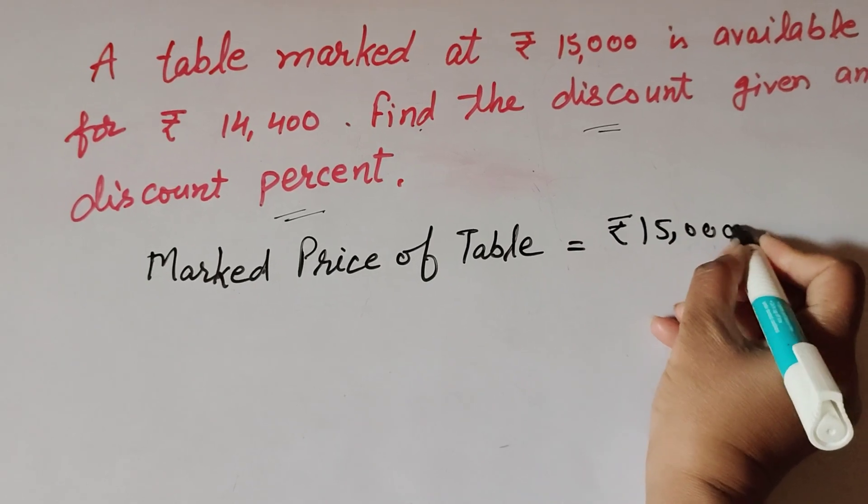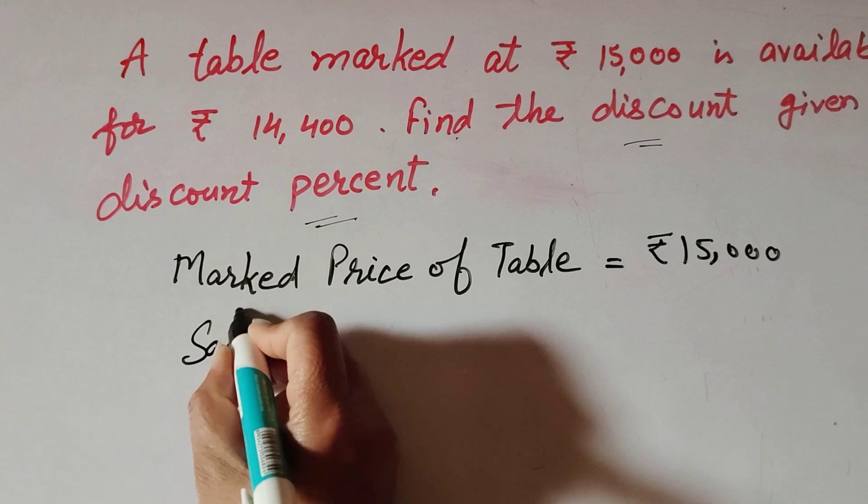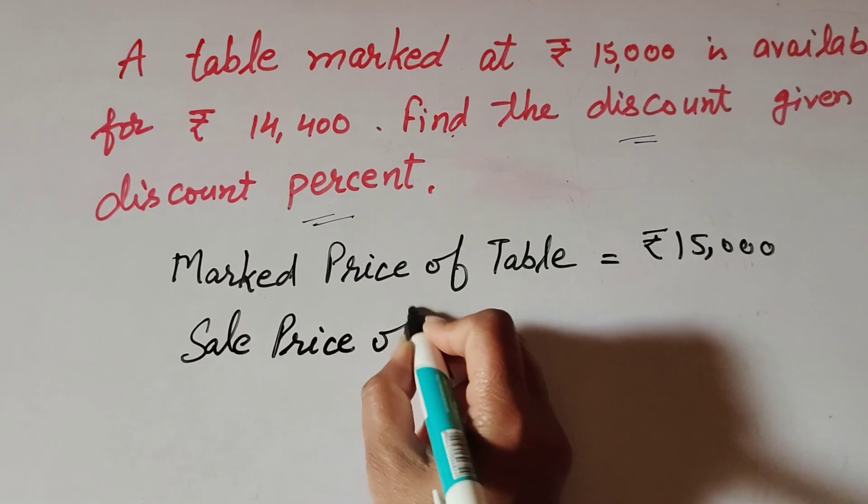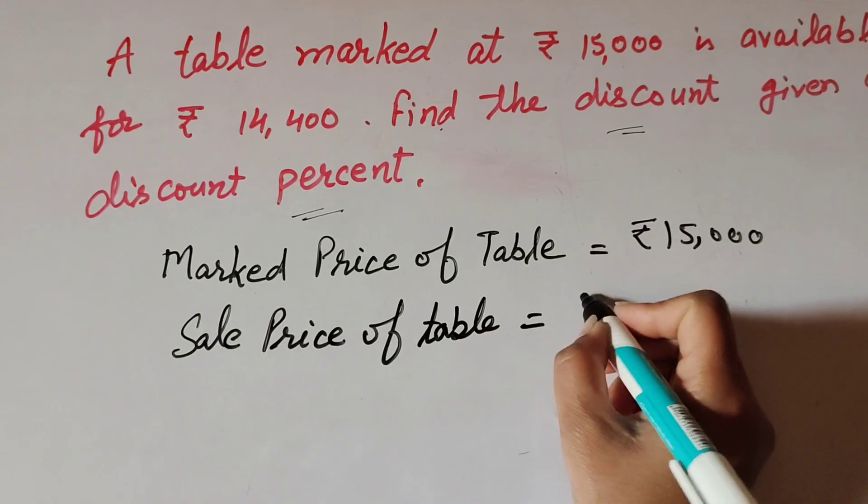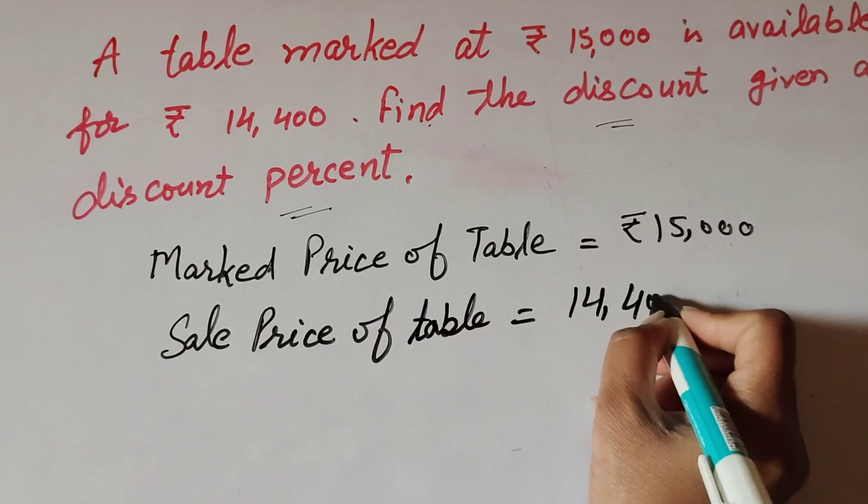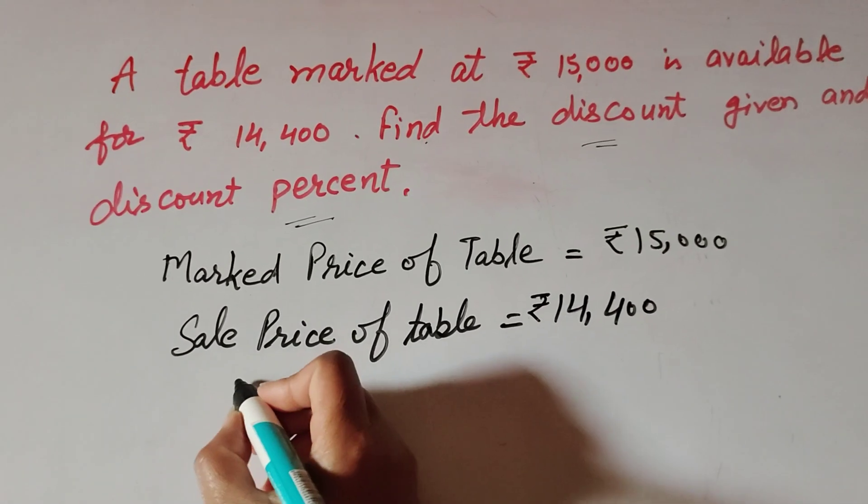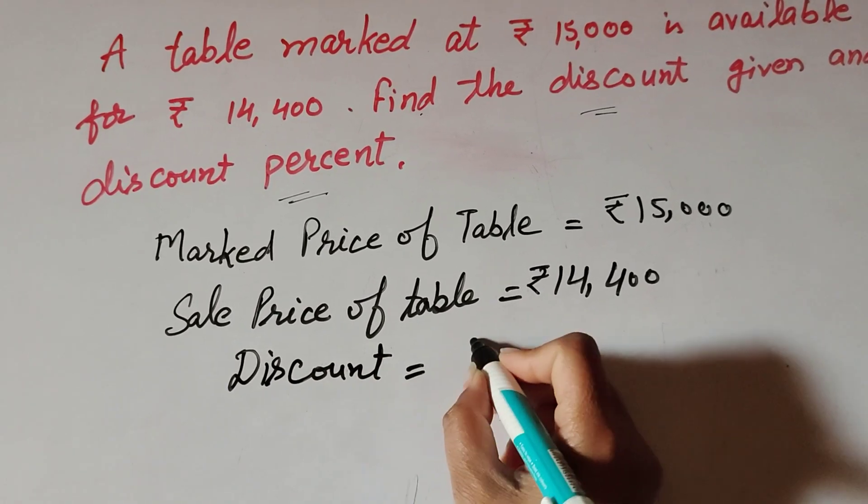So ₹15,000 is marked price. And selling price of table also given. Sale price of table, it is equal to ₹14,400. ₹14,400 is selling price. So we find discount. Discount is equal to...